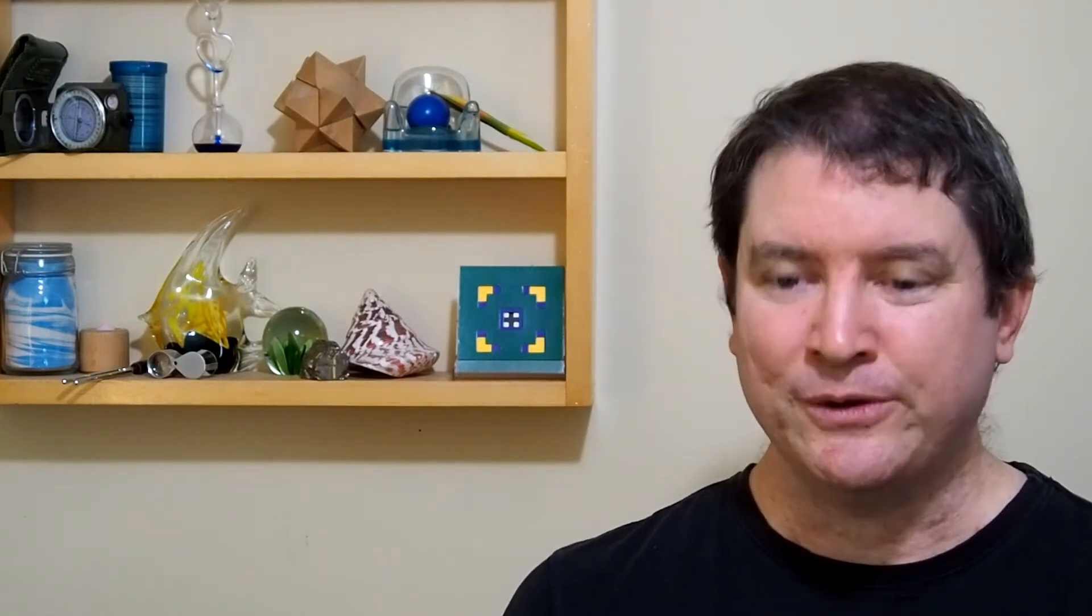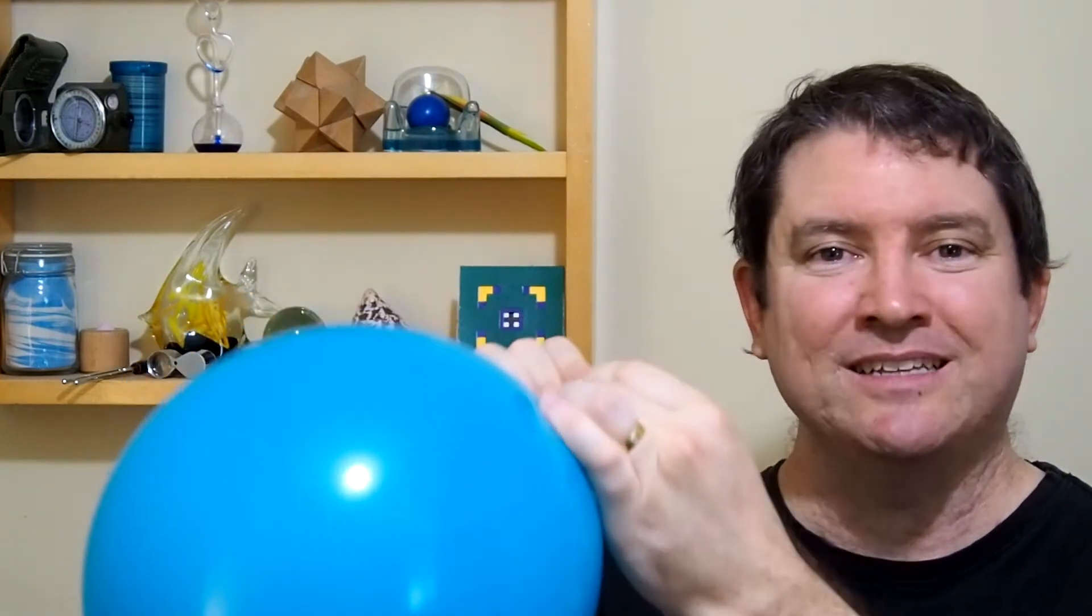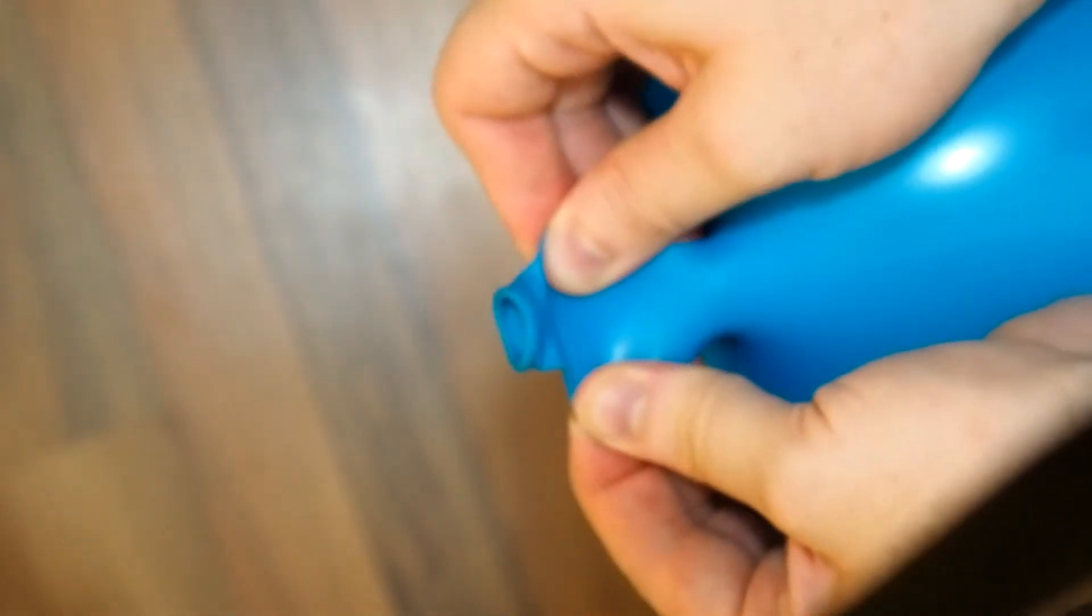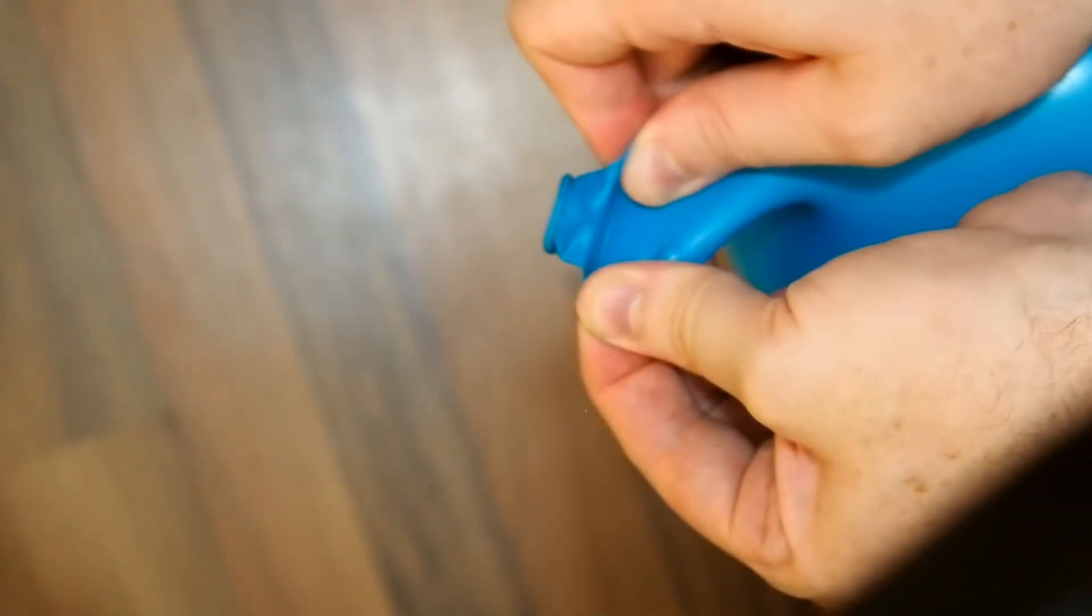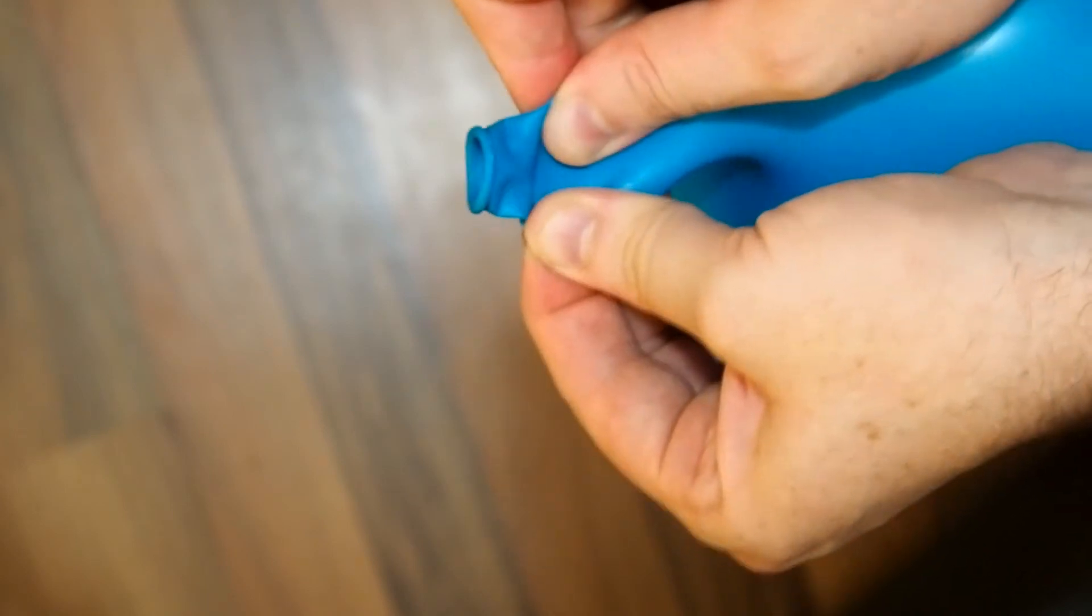You've probably done this before, and it's a really good model of how birds sing. Blow up a balloon, and then stretch the neck while letting some air out. When we stretch the balloon, we're making tiny bumps and ridges in the constriction that block air.